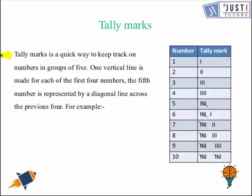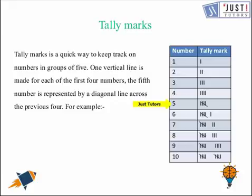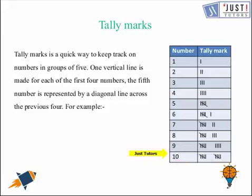Tally marks is a quick way to keep track of numbers in groups of 5. Here we draw 1 vertical line for 1, 2 vertical lines for 2, 3 vertical lines for 3, 4 vertical lines for 4. And if we want to show 5, we draw a diagonal line crossing the 4 that we have previously drawn. For 6, you write 5 the same way and then put 1; for 7, 5 and 2; 8 is 5 and 3, and so on. You can see for 10 we have 2 such groups of 5 each. This is how we work with tally.